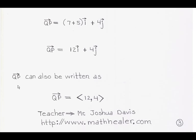Vector QP can also be written in vector coordinate notation as ⟨12, 4⟩. This gives us the vector coordinates of QP: 12 gives us the magnitude along the x-axis, or its horizontal component, and 4 gives us the magnitude of its vertical component. This notation gives us the magnitude of the components of QP.